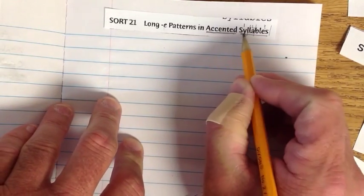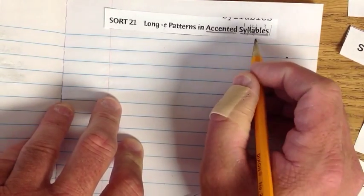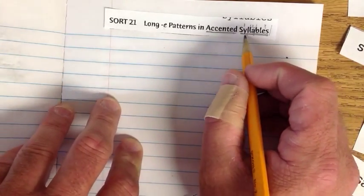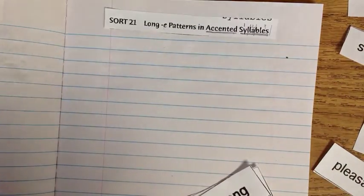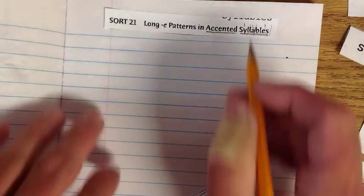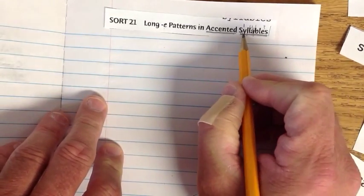But when we find a syllable, we're going to find out which one has the accent. The accent is the one that you say a little bit louder and a little bit higher. So we go syllable. Syl.